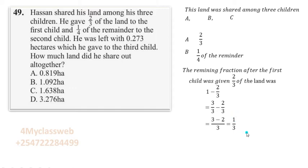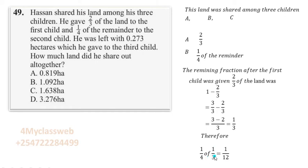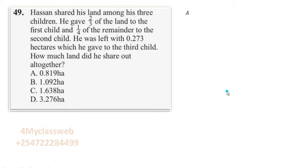With this one-third of the remaining piece of land, it was not all given to child B. Child B received only a quarter of the remainder. Therefore, child B received a quarter of one-third, which gives one over 12 of the land. So this is the fraction that child B received.